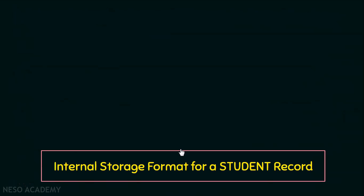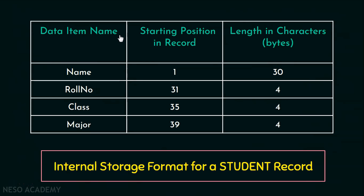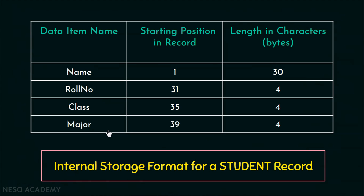We already have an example of a university database with a student table. Let us see an internal storage format for that student record, with the column name, starting position, and length in characters. In traditional file systems, this structure is present within the programs itself. Now if I want to add another piece of data — say the date of birth — since the structure is changed, the program will not work and the program has to be changed. Whereas in the database approach, if we want to add a new piece of data like date of birth, we can add it without affecting the programs. Since the structure is separate from the programs, we don't have to change the programs — we just add this new information in the catalog. So next time a DBMS program refers to the catalog, the new structure will be referred and used.